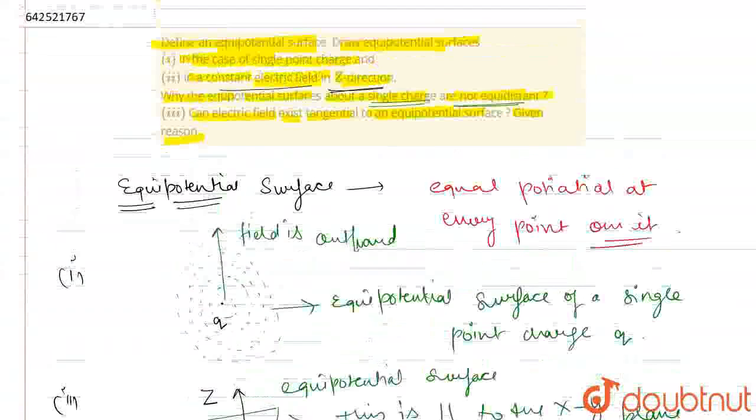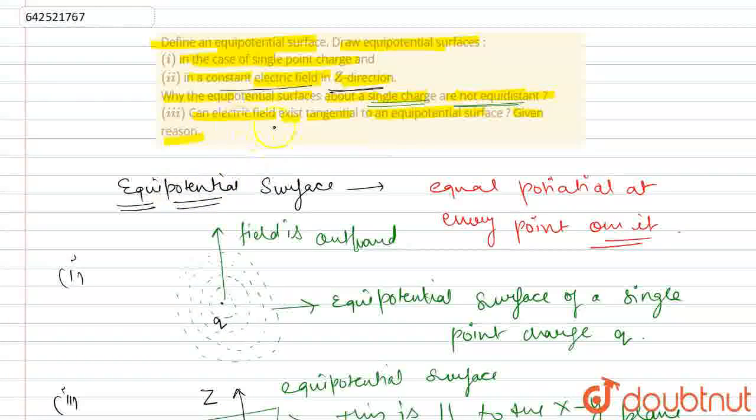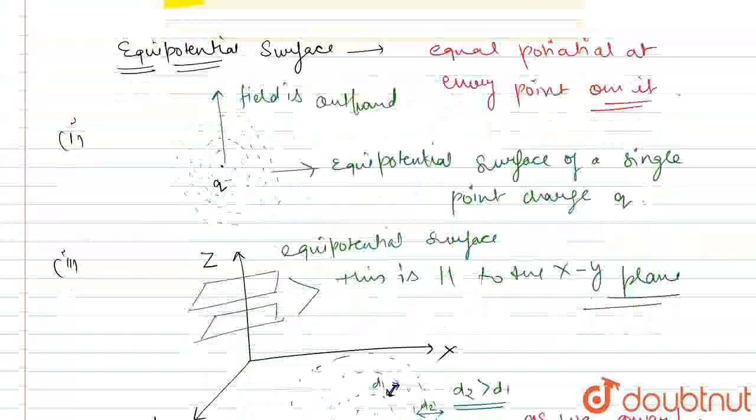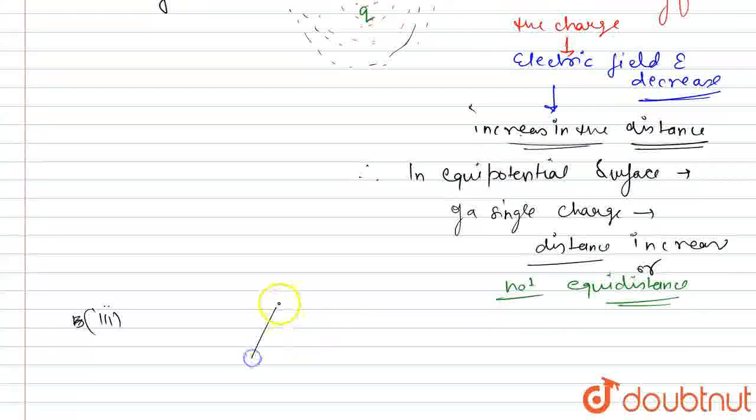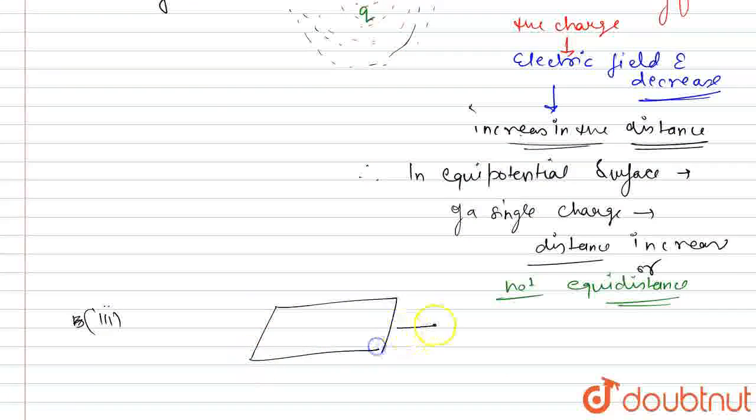So in part third we have to show then can electric field exist tangential to equipotential surface and we have to justify this answer is correct or not. So suppose this is our equipotential surface and this is our electric field E. The work done is given as q dv and if this is an equipotential surface then dv is equals to zero.